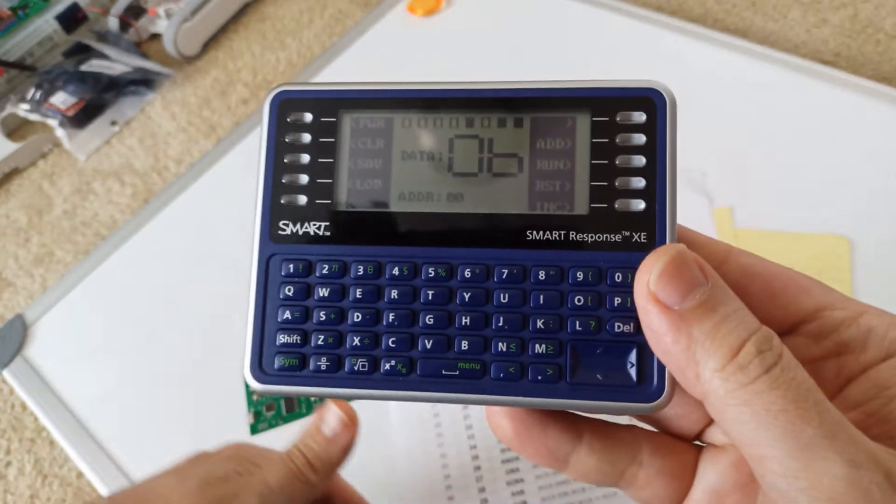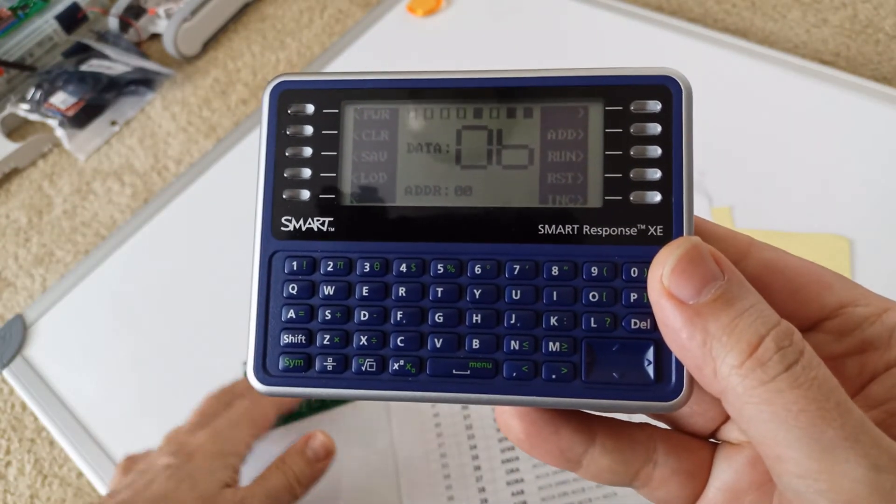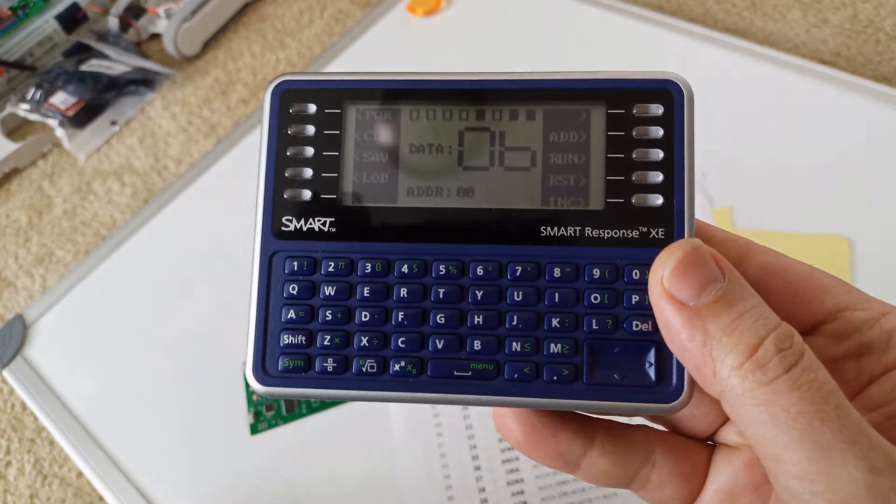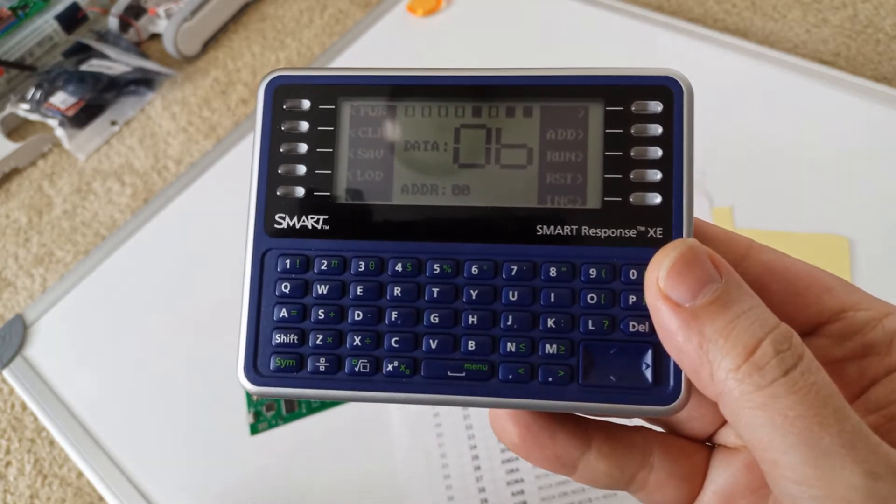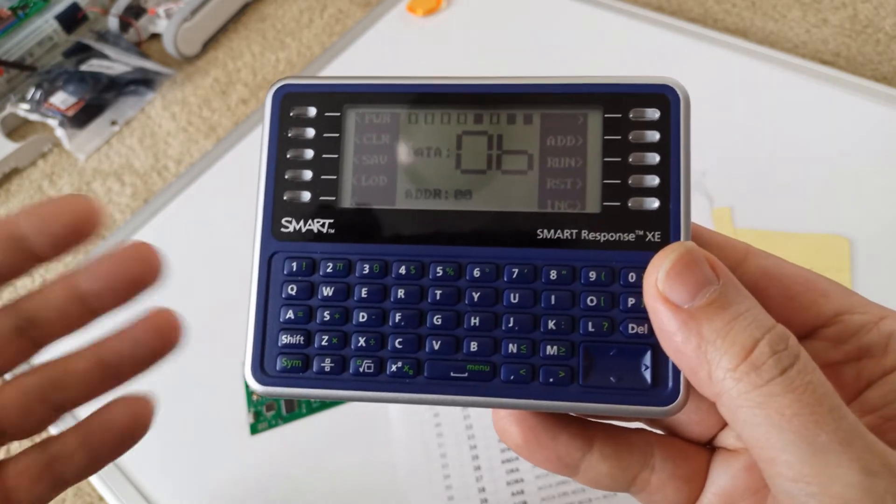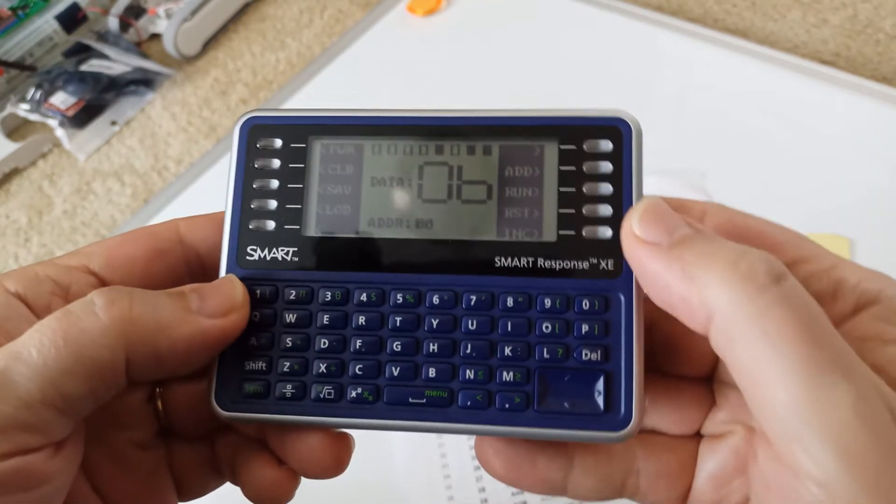There's no temperature sensor on the smart response like there is on my 8-bit unit, but there is a way to measure the voltage. So I've replaced that instruction. Instead of reading the temperature, you actually read the voltage on your batteries. So that's what this program is.